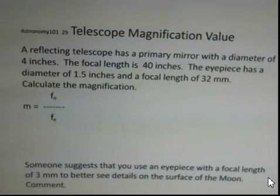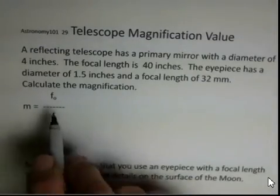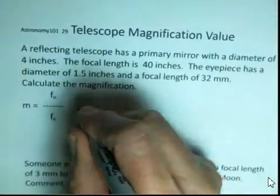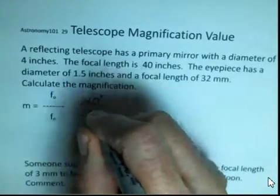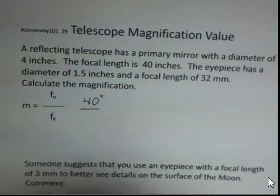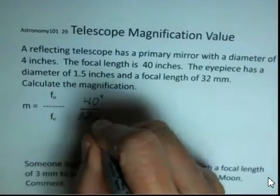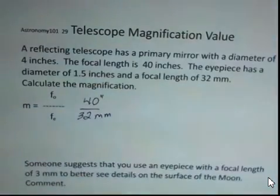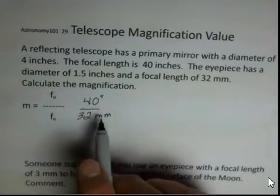So we need to do this division here. Focal length of the objective, 40 inches. Focal length of the eyepiece, 32 millimeters. Do you see any difficulties in doing this calculation? Well, we've got mismatched units.